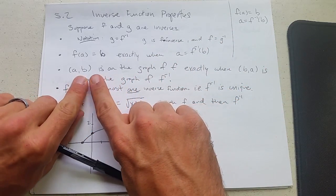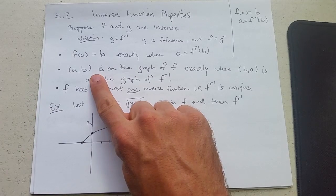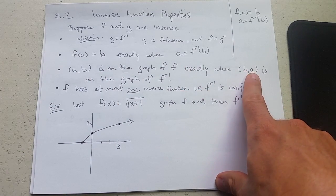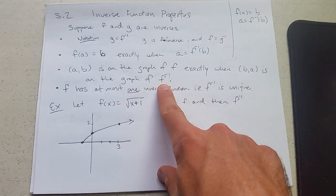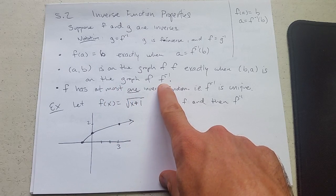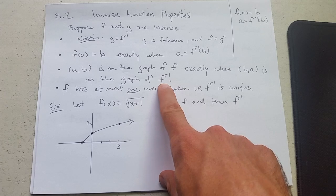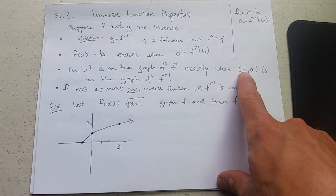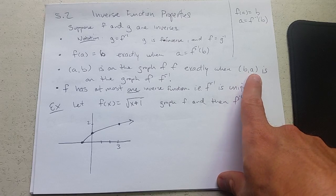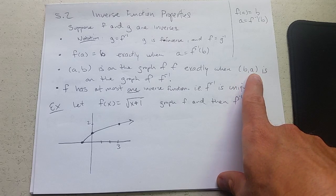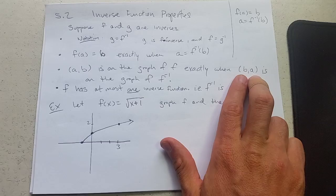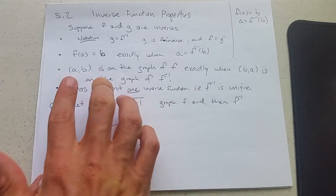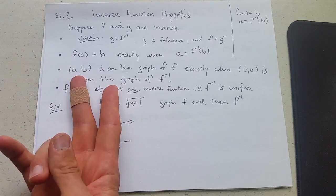When it comes to graphs, (a,b) is on the graph of f exactly when (b,a) is on the graph of f inverse. This is not similar to any of the symmetries we've seen before. All the symmetries involved making one or both of these negative. Nothing's becoming negative here. What's happening is (b,a) is on the inverse graph when (a,b) is on the regular graph. So we're just taking the x and y values and swapping them.